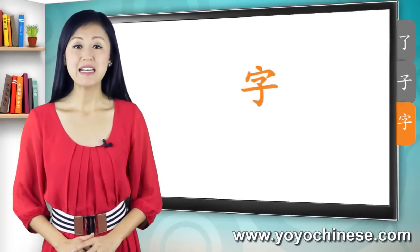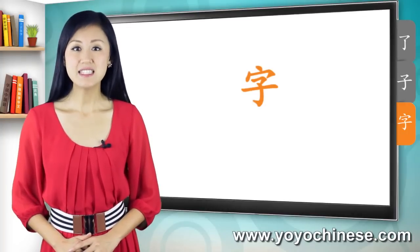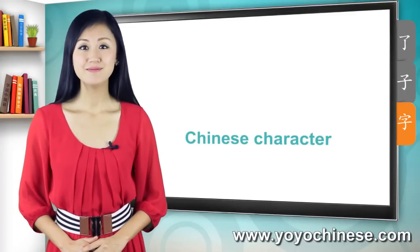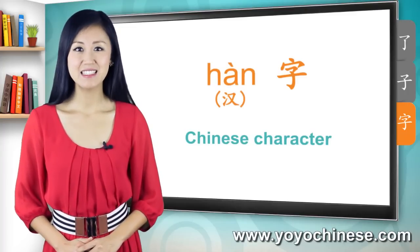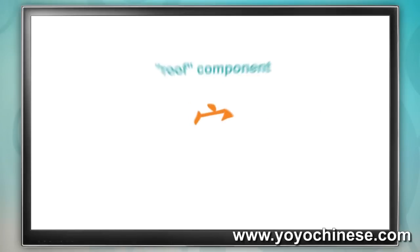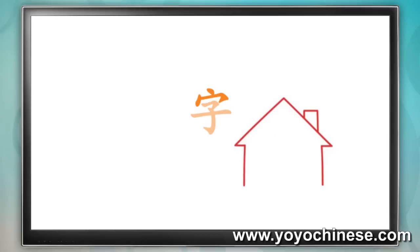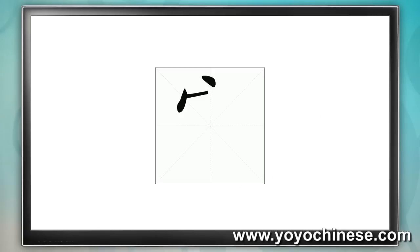Our last character for this lesson looks like this. It's pronounced 字. It's the character that means character. Remember how to say Chinese character? Right, it's 漢字. This 漢字 is 子 underneath a roof component. The roof is a common component that we'll see again in more characters. Often it's a clue that the character has something to do with a shelter of some sort. In this case, you can think of the roof component as being a school. Inside the school, there's a kid represented by 子, who's learning how to write 漢字. Here's how 字 is written stroke by stroke.